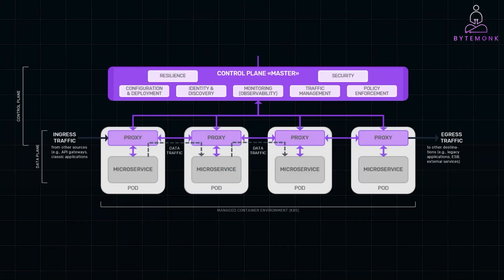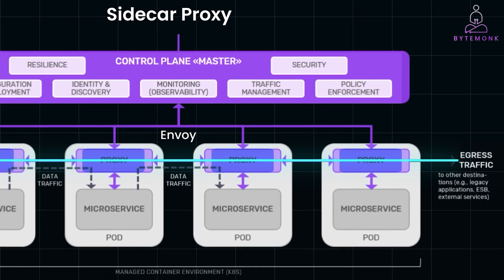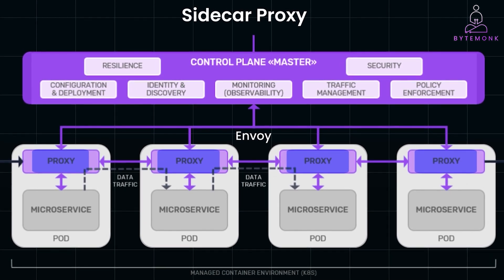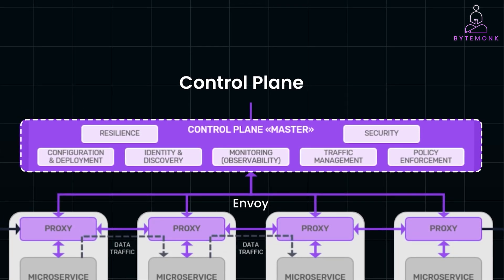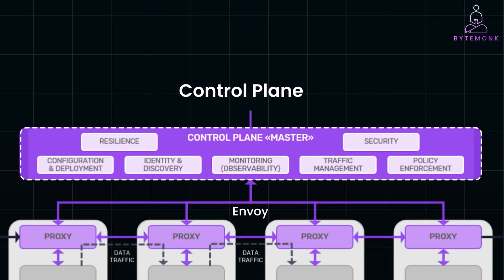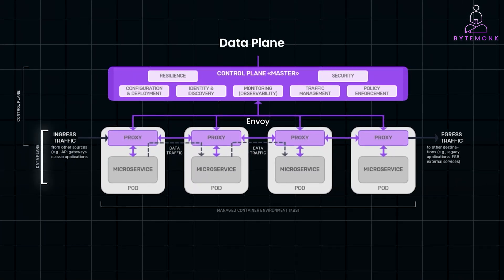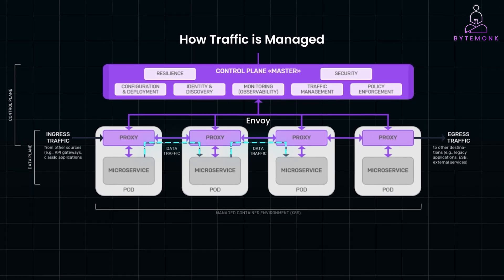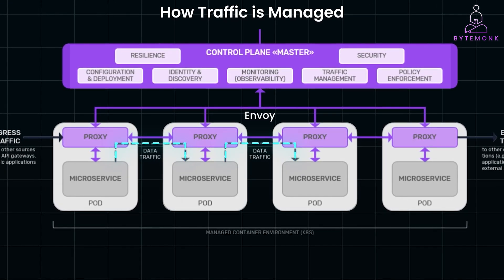In a service mesh architecture, each microservice typically runs alongside a sidecar proxy in the same pod or instance. The sidecar proxy — like Envoy, used by Istio — handles all inbound and outbound traffic for the microservice. It intercepts and controls the communication between microservices without requiring any changes to the service code. The service mesh also includes a control plane, which is responsible for the management and configuration of all sidecar proxies — managing policies, configurations, and monitoring. The data plane consists of the sidecar proxies that actually handle traffic between services according to the rules set by the control plane. When a service wants to communicate with another service, instead of talking directly to it, the request goes through its local sidecar proxy, which handles load balancing, retries, or routing based on control plane rules.